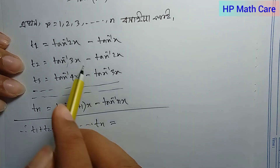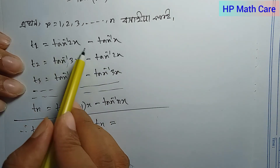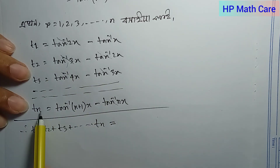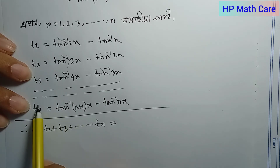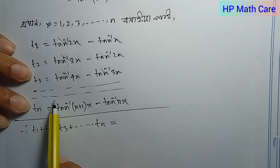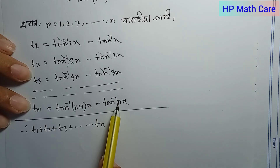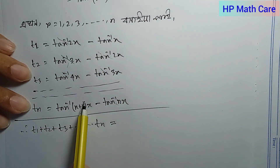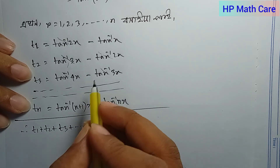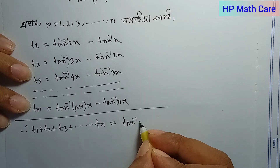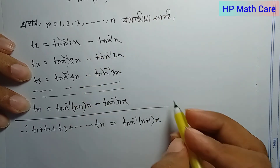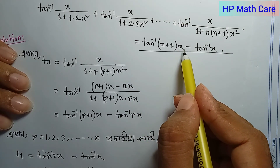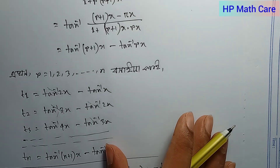Adding T1 plus T2 plus T3 plus up to Tn, the intermediate terms cancel: minus tan⁻¹(2x) cancels with plus tan⁻¹(2x), minus tan⁻¹(3x) cancels with plus tan⁻¹(3x), and so on. The final answer is tan⁻¹((n+1)x) minus tan⁻¹(x).